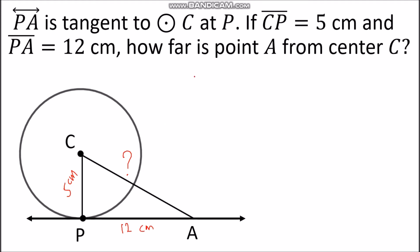Now, applying Theorem 101, the tangent line theorem, we can say that segment CP is perpendicular to the tangent, which is segment PA. Since they are perpendicular, they form a right angle. As you can see in the figure, we are able to form a triangle, and there is a right angle — so triangle CPA is a right triangle.